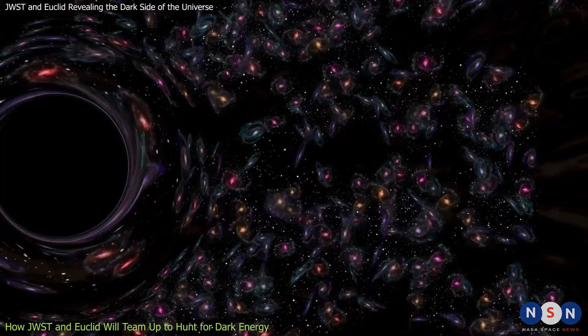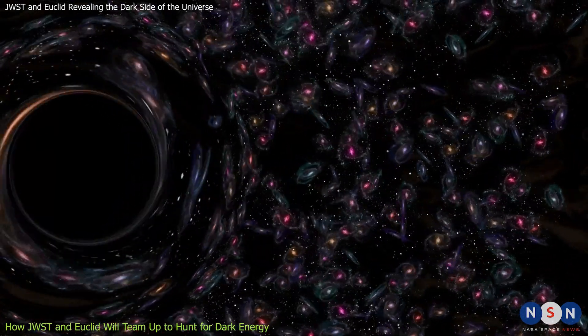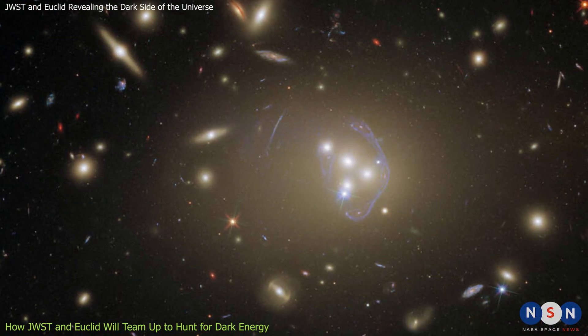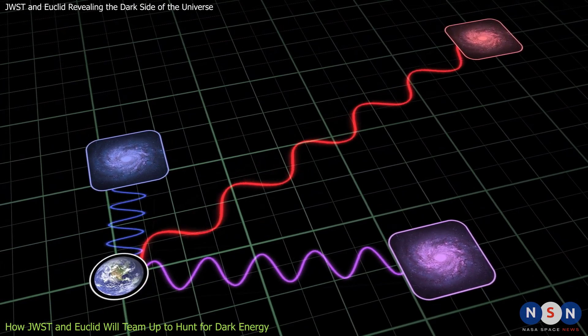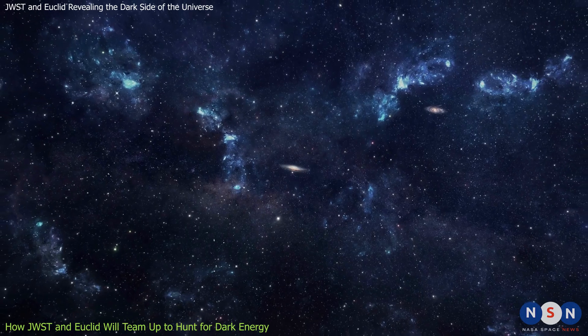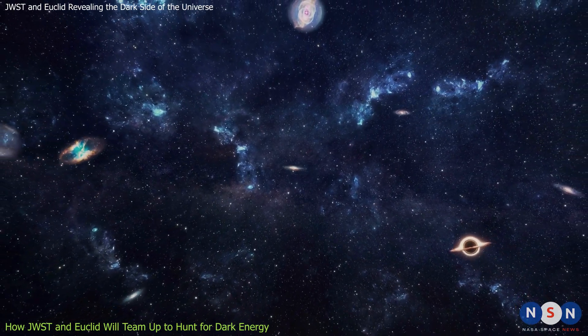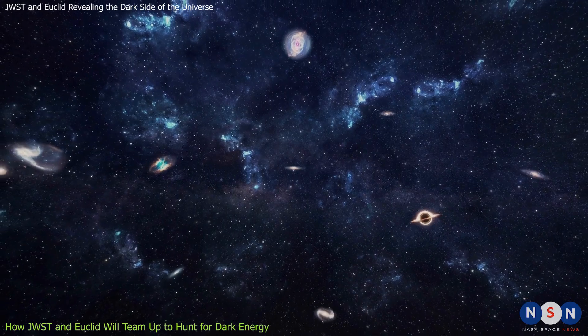Galaxy clustering is a phenomenon that occurs when galaxies tend to group together in certain patterns, depending on their distance and age. By measuring the positions and redshifts of these galaxies, Euclid will be able to measure how fast the universe is expanding and how this expansion is affected by dark energy.